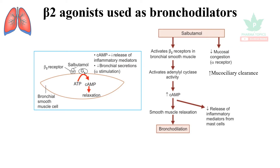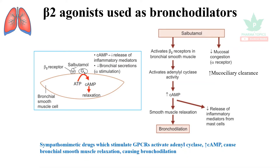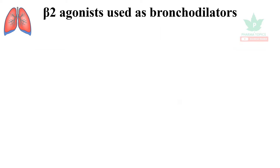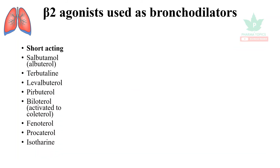It also decreases mucosal congestion via alpha receptors and increases mucociliary clearance. Additionally, the increase in cyclic AMP decreases inflammatory mediators from the mast cells. In summary, sympathomimetic drugs stimulate GPCRs, activate adenyl cyclase, increase cyclic AMP, cause bronchial smooth muscle relaxation, and thus produce bronchodilation.